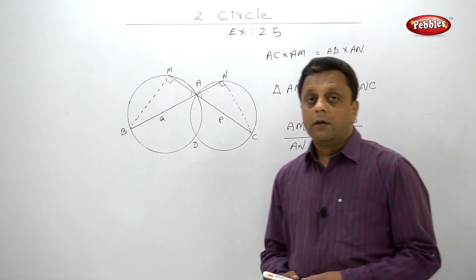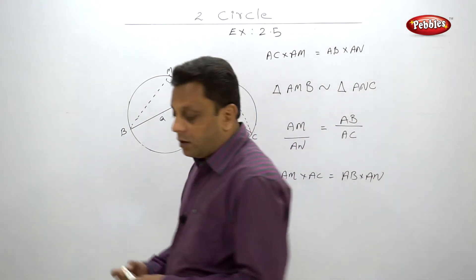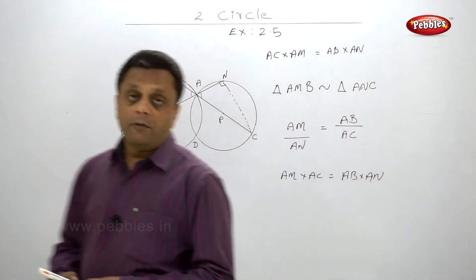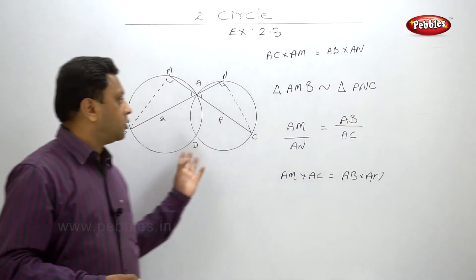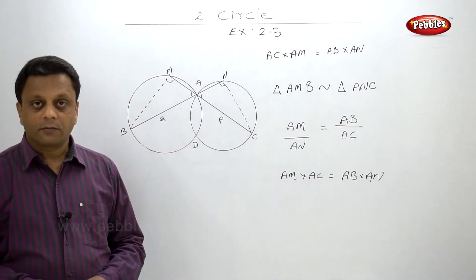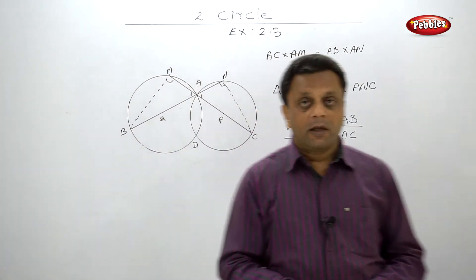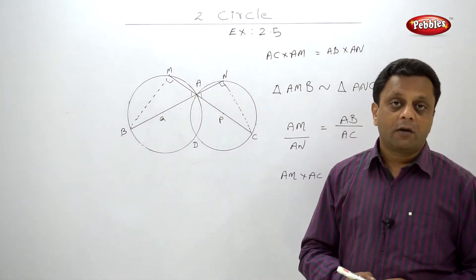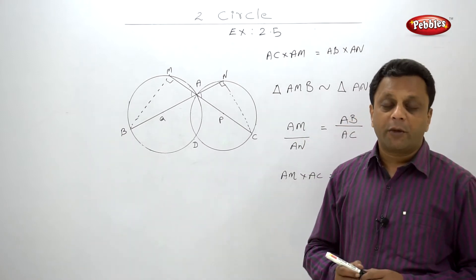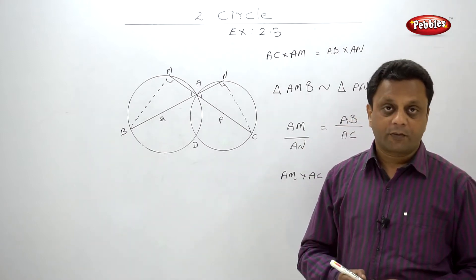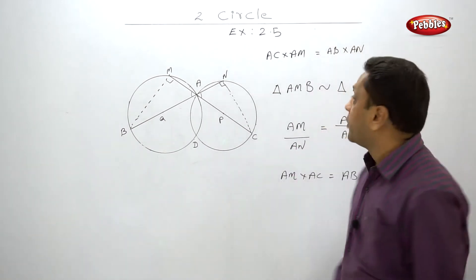Though exercise 2.5 was supposed to be about problems of intersecting secants, it is not strictly so. Don't expect that in the paper problems will be on one particular topic only. Now let us go to the second problem of 2.5.